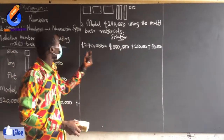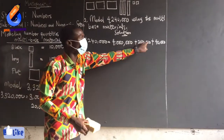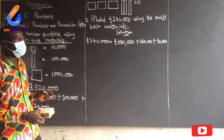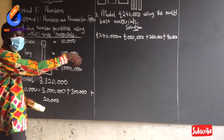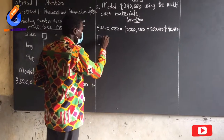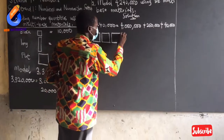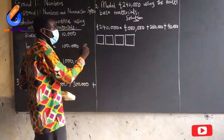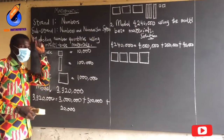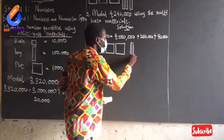So 4 million goes with the flat, the 200,000 goes with the long which is 100,000, and the 40,000 goes with the block. If 1 flat is giving me 1 million, then how many flats will give me 4 million? 4. So I'll draw 4 flats representing 4 million — 1 million, 2 million, 3 million, 4 million. Then 100,000 represents 1 long, so this will give me 2 longs.